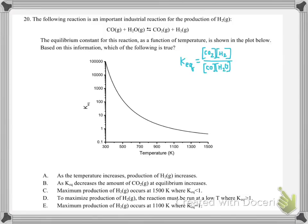For problem number 20, they give us a reaction at equilibrium. I wrote the K_eq expression, and then they plot K_eq as a function of temperature. When we look at this plot, we can see K_eq getting smaller and smaller as we heat up the temperature. So as we increase temperature, we shift to reactants, because K is getting smaller, which means our denominator is getting bigger — we have more reactants around.